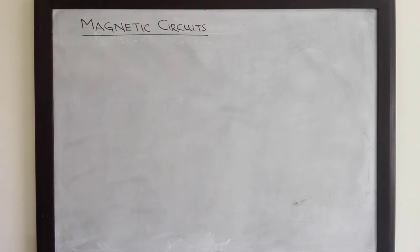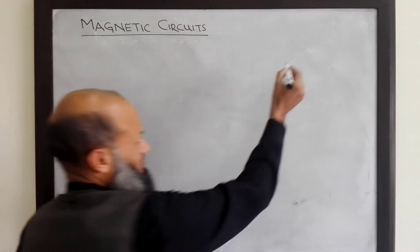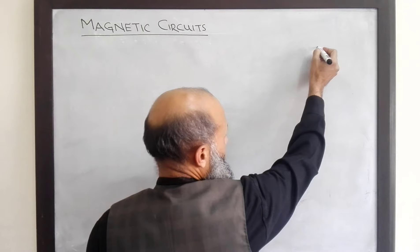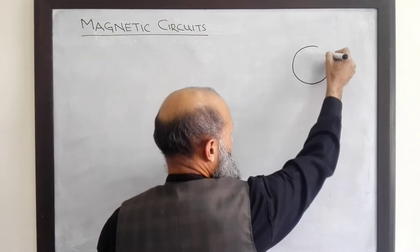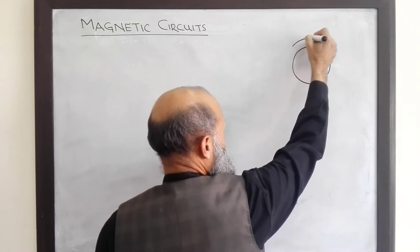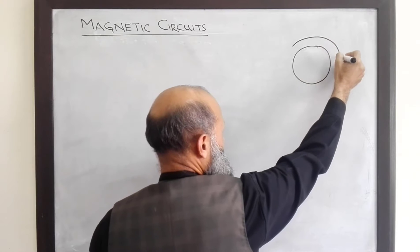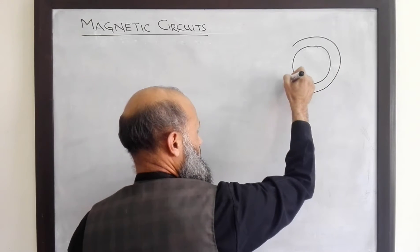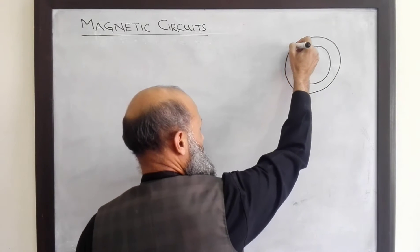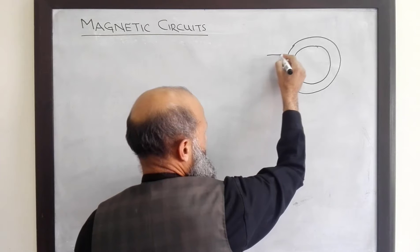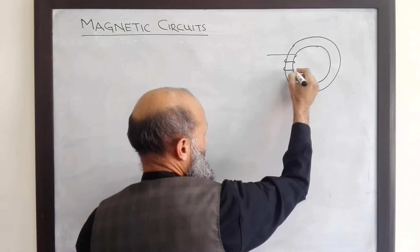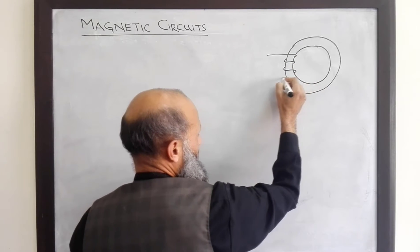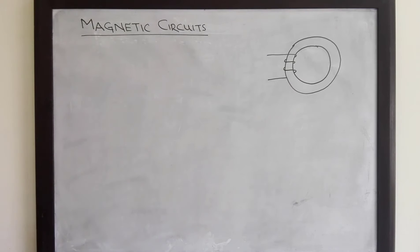The simplest magnetic circuit is this arrangement: a circular ring of a ferromagnetic material with a current-carrying conductor wound on it.